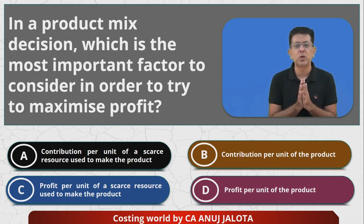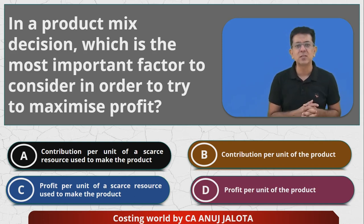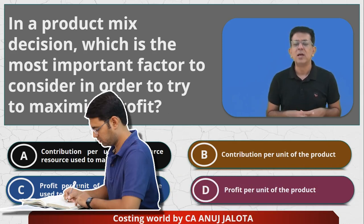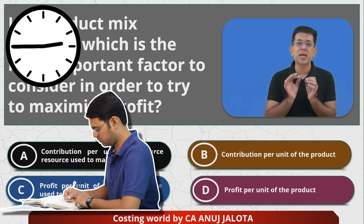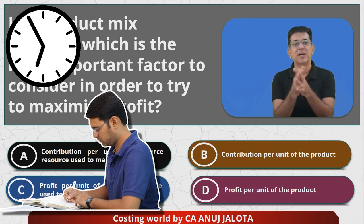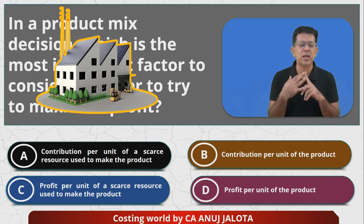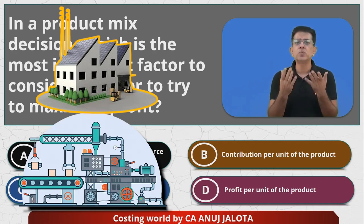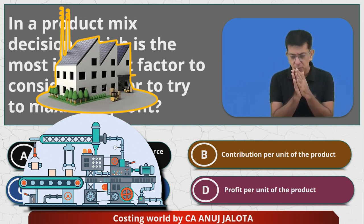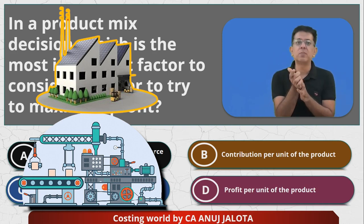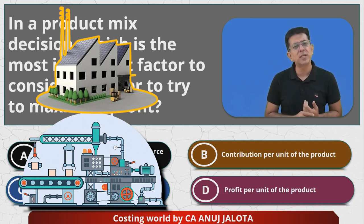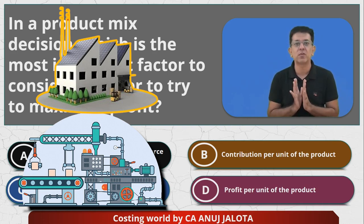Contribution is what should be considered, and if something is in short supply, you must use that resource to the best. Think of your study leave — time is in short supply, so time is the limiting factor or key factor. Try to use your time to the best. Similarly, if machine hours are in short supply in a company producing X1, X2, X3, use machine hours properly — produce that product first that gives the highest contribution per machine hour. If every machine hour is used properly, total contribution will also be the highest.